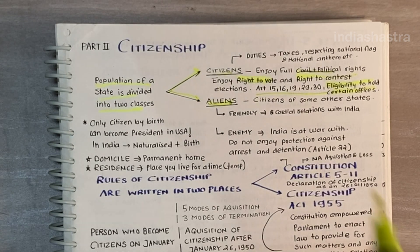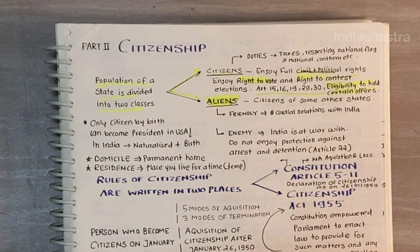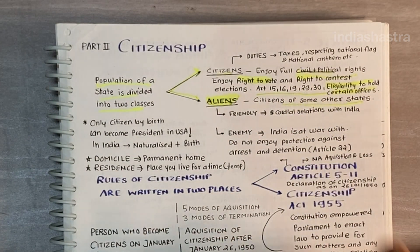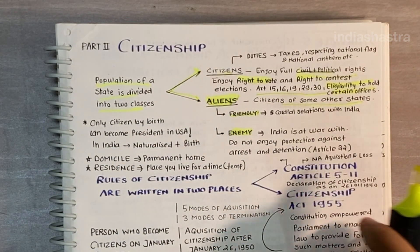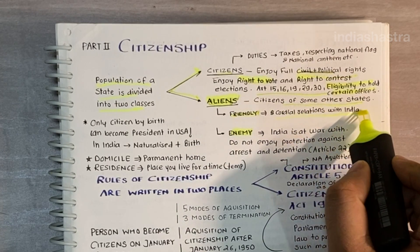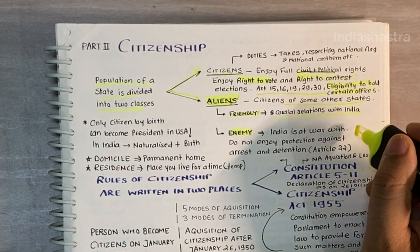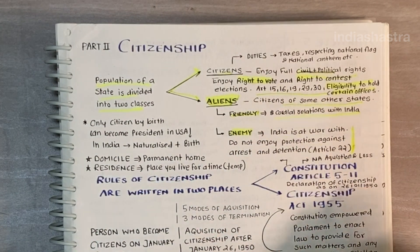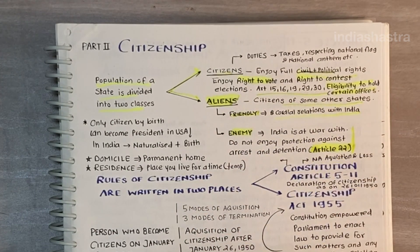Another set of people is aliens — they are citizens of some other nation state. Aliens are further divided into friendly aliens and enemy aliens. Friendly aliens belong to a country that has cordial relations with India. On the other hand, enemy aliens belong to a nation at war with India, and they do not enjoy protection against arrest and detention, which is Article 22 of the Indian Constitution.